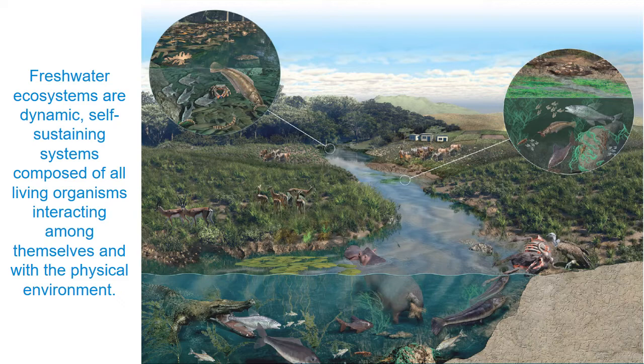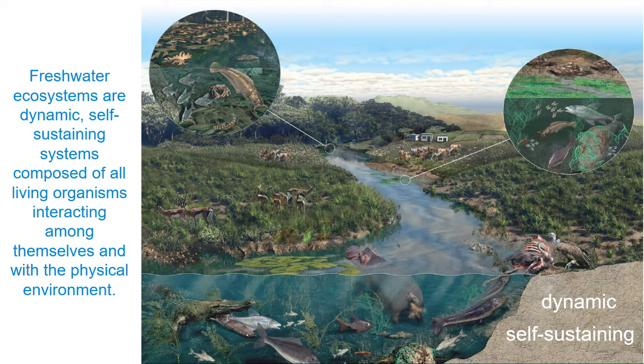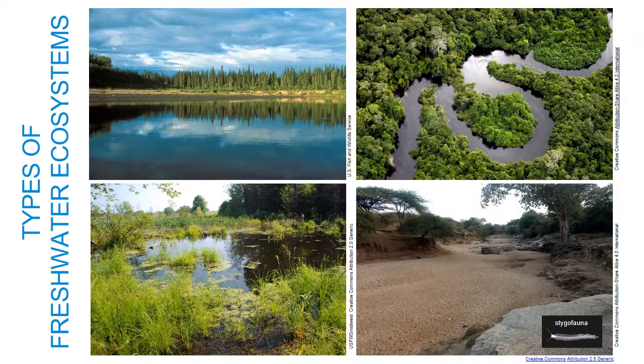Freshwater ecosystems are dynamic, self-sustaining systems composed of all living organisms interacting among themselves and with the physical environment. They're composed of potentially thousands of individual species ranging from microbes to large mammals, all striving to meet their needs for energy and reproduction. Freshwater ecosystems are dynamic, meaning they change over time from season to season or over many years. They're self-sustaining, meaning the different components interact in ways to sustain and regulate system integrity and health. Biotic interactions among native species, natural flow and sediment levels, and suitable water quality all contribute to sustaining freshwater ecosystems.